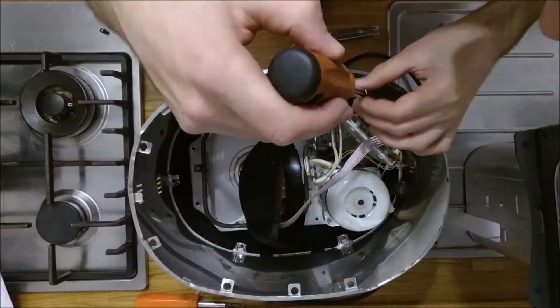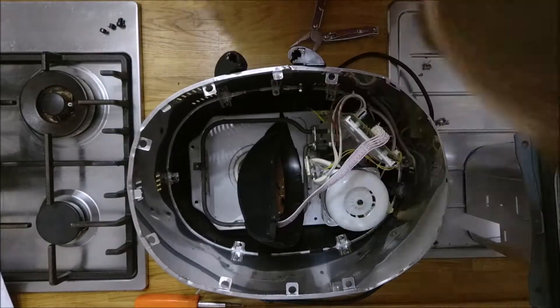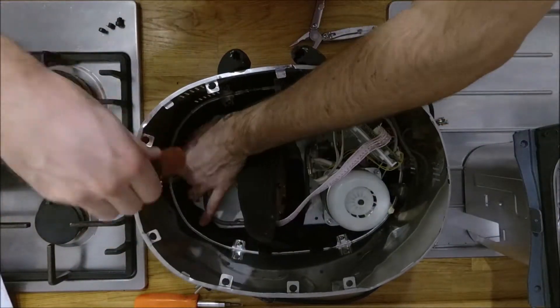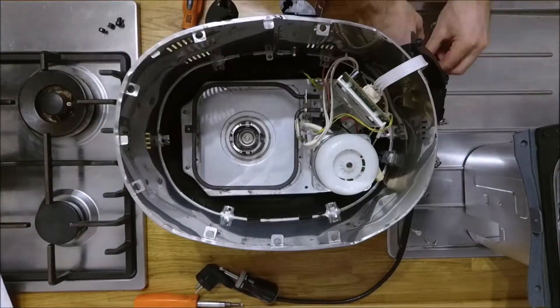Once the belt is mounted, you can start the reassembly. Put the base back in and screw it all down. Don't forget to reattach the ground.